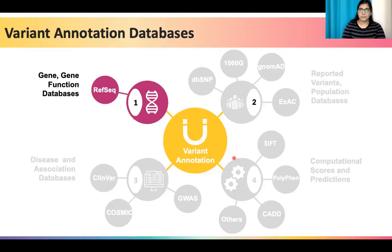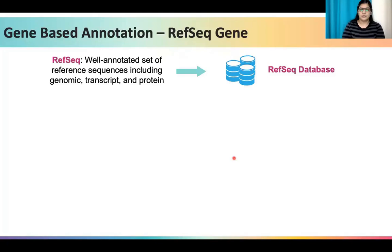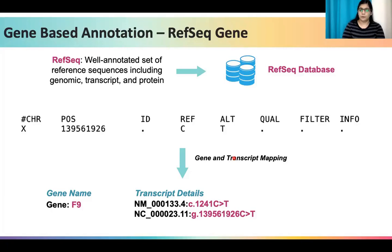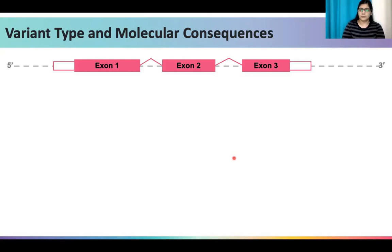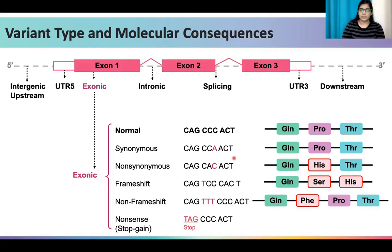To know the gene or transcript name in which the variants lie, we can map the variant against the RefSeq database that you have been made familiar with in the previous sessions. Mapping to RefSeq will help uncover the gene name, transcript details in the form of NM IDs and NC IDs, and the protein change if any is associated with the variant. Mapping to RefSeq will also help identify the type of variant based on its position in the genome — a variant can be intergenic, upstream, or downstream; a UTR variant lying in the five prime or three prime UTR; an intronic or splice site variant; or an exonic variant.